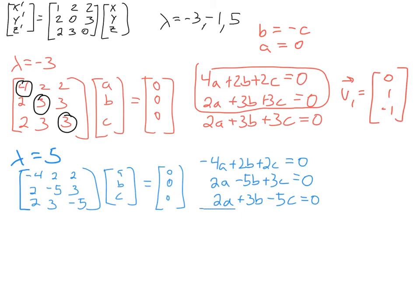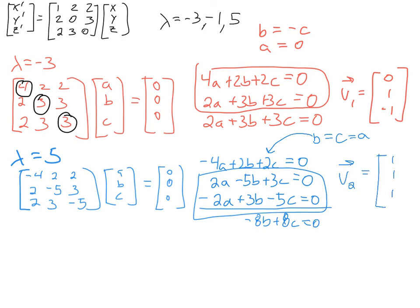We'd want to solve this system simultaneously. For example, what I could do, just focusing on these two equations, I can subtract those two equations, so the A's would cancel, we would get minus 8B plus 8C equals 0. So that would tell me first of all we need B to equal C, and then plugging that condition into the very top equation, you could convince yourself that A would need to equal those values as well. So for this eigenvalue of 5, our eigenvector would be (1, 1, 1), or any multiple of that would suffice.